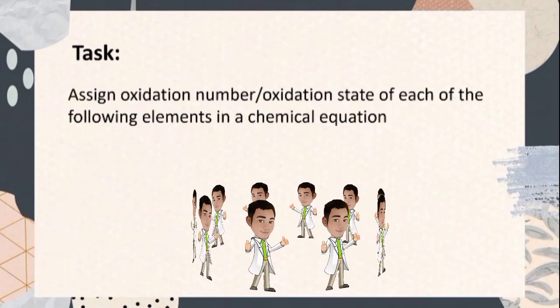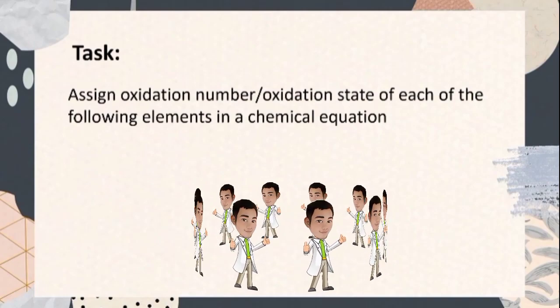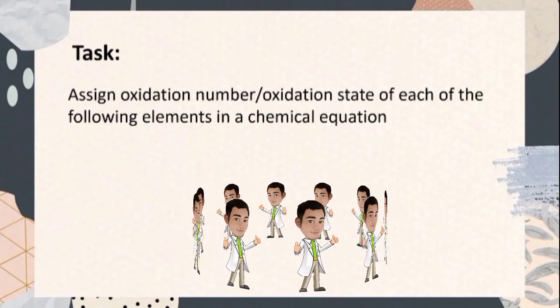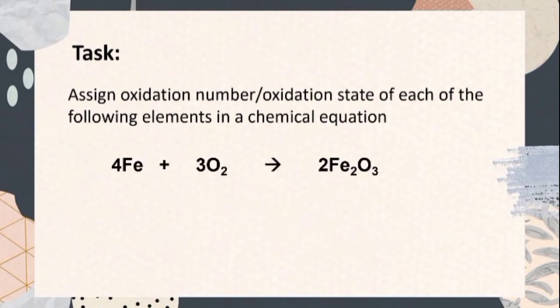Now it's time to do your task. Assign the oxidation number or oxidation state of each element in the following balanced chemical equation: four moles of iron plus three moles of oxygen gas yields two moles of ferric oxide. Good luck, till next time, goodbye everyone.